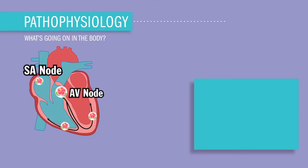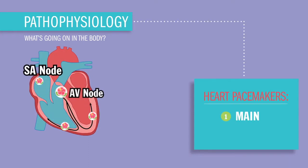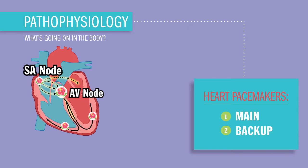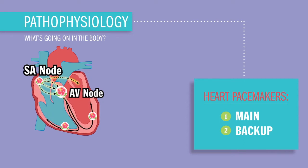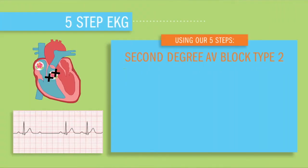So what's really going on in the body? Well, as you guys know, the heart has one main pacemaker and two backup pacemakers. In this case, conduction originates in the SA node like normal, but only a few of the P waves — our atrial impulses — are conducting through that AV node, basically that tollbooth. Using our five steps, let's interpret this EKG.